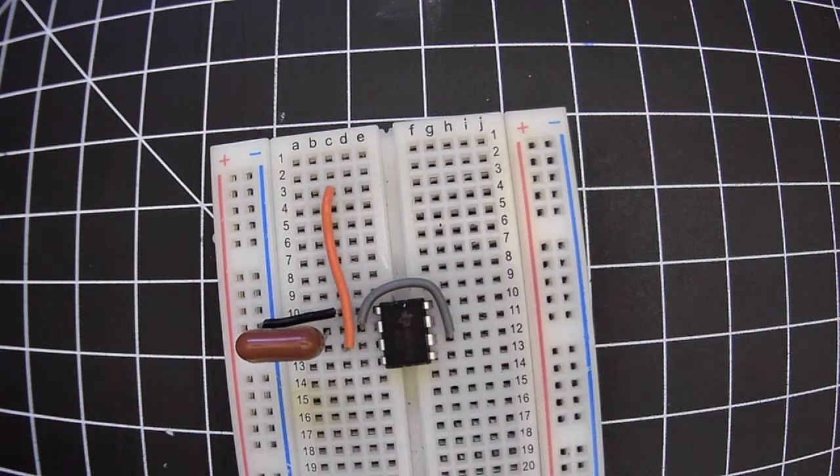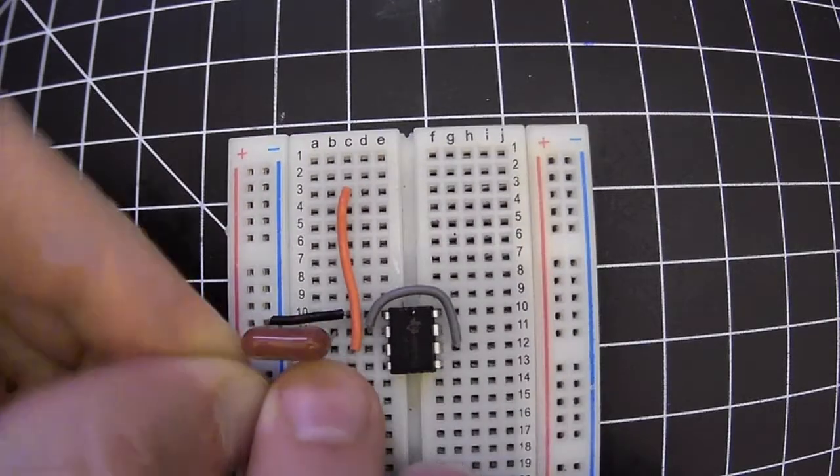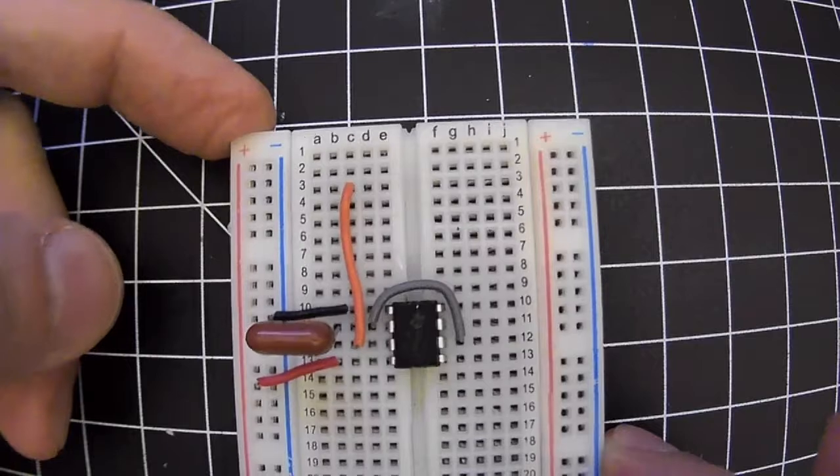And pin 4 we see just goes to plus, so I'm going to connect the red rail over here to pin 4, and now we're done with the left-hand side.